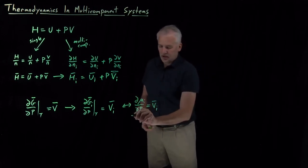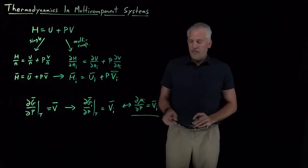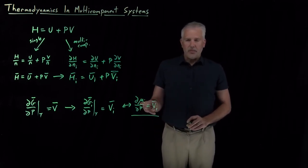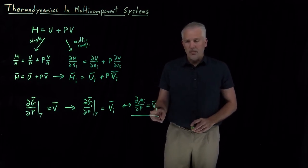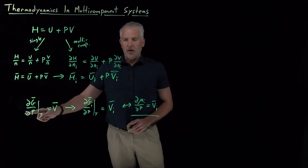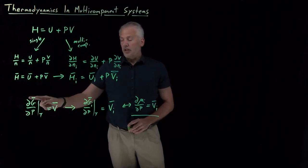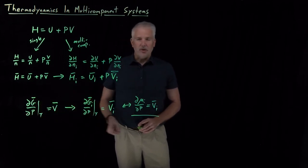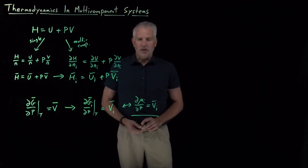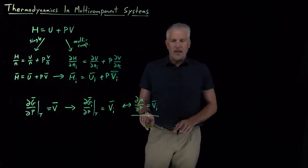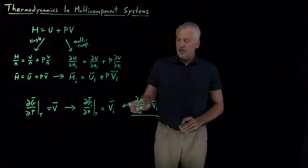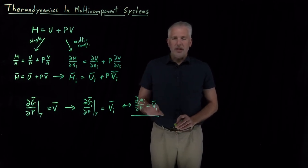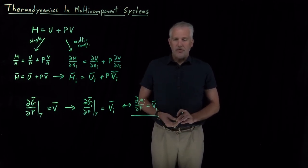This expression looks somewhat new. If I ask how much does the chemical potential of something change as I change the pressure — that's just the partial molar volume, for the same reason we already know that the molar Gibbs free energy changes proportionally to the molar volume in a single component system. Sometimes these expressions can look a little different until you remember that the chemical potential is just the partial molar Gibbs free energy.